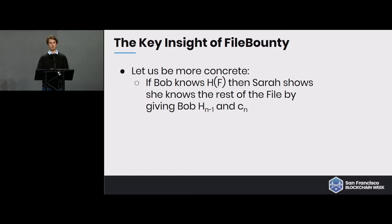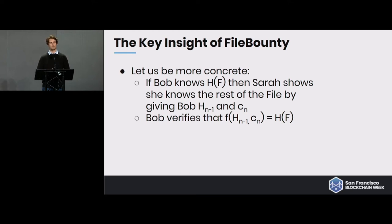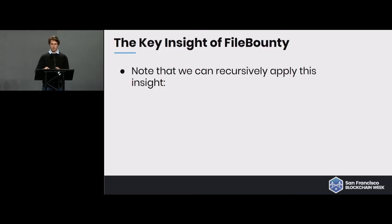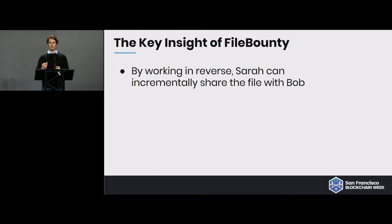This works because the compression function is pre-image resistant, a key feature of secure hash functions. Bob verifies that F(h(n-1), cn) equals the file hash — if true, it means she has the correct file chunk. Providing h(n-1) and c(n), you apply the compression function and get the hash, confirming what was given is correct. You can recursively apply this insight to the whole file.